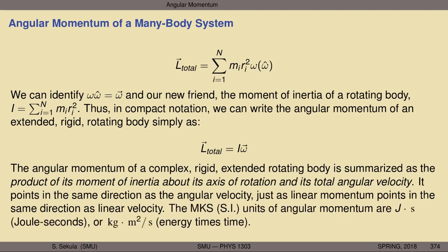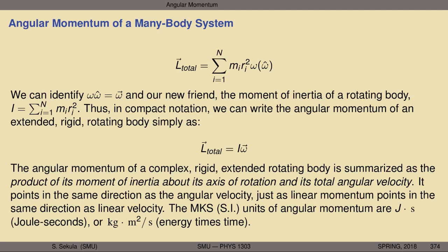The SI unit of angular momentum is the joule-second (J·s), which can also be written as kilogram·meter²/second. It is the product of energy and time.